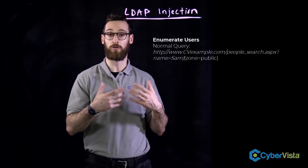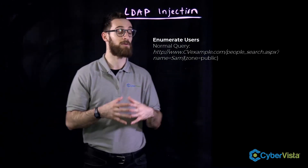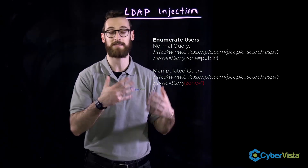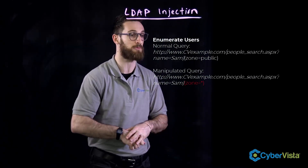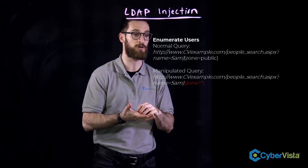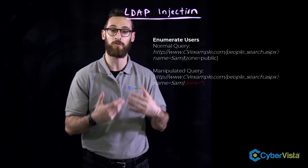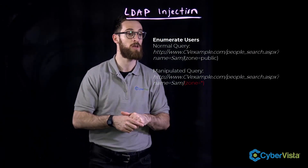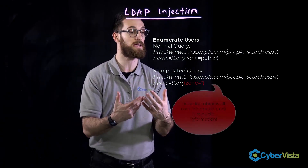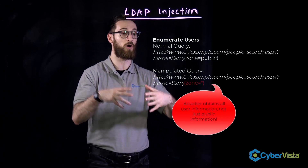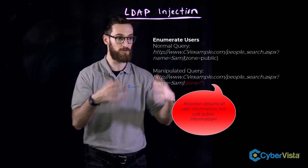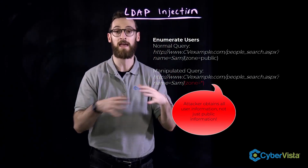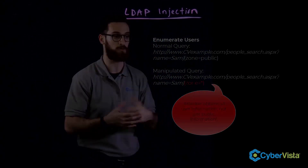So this will be our original or normal query. And you can notice if we're going to do a malformed query, we need to change that last part. So we're going to change our zone from public to a little asterisk, which basically means just pull all. So by using this query, the attacker can basically obtain all information on the user Sam, and not only just what's available publicly as in the original query.